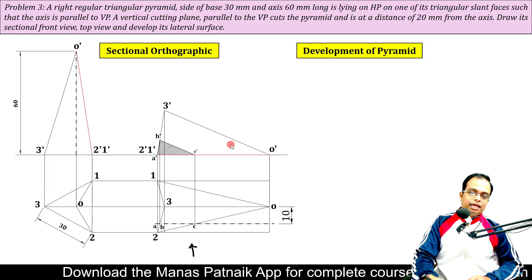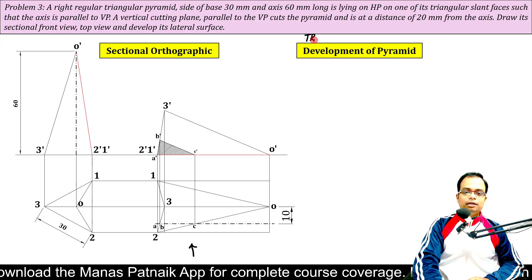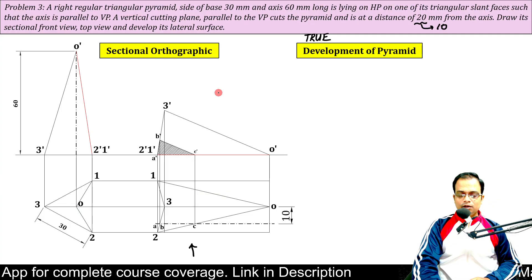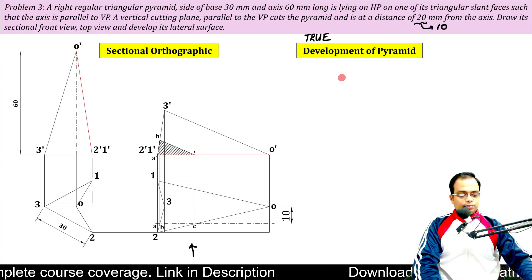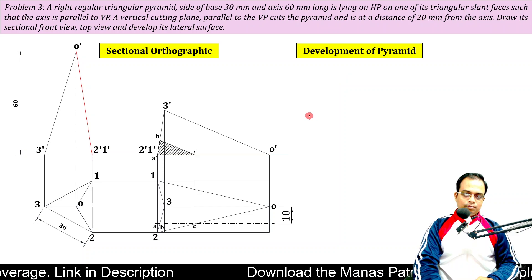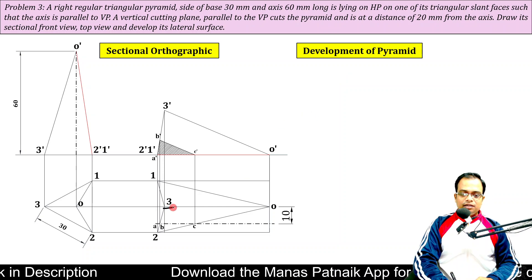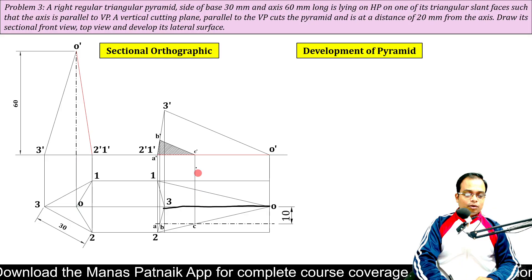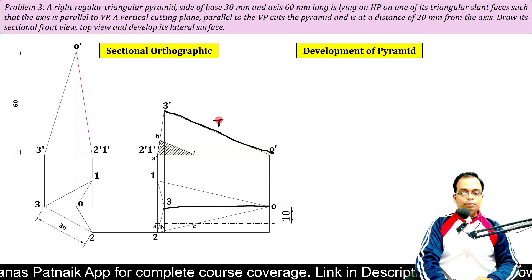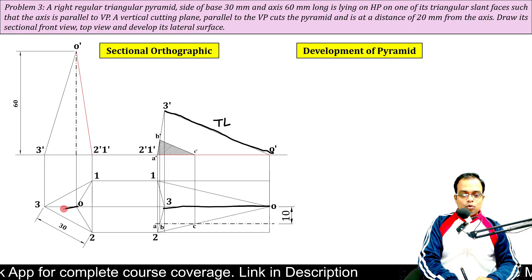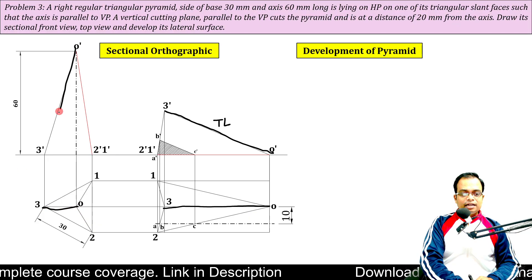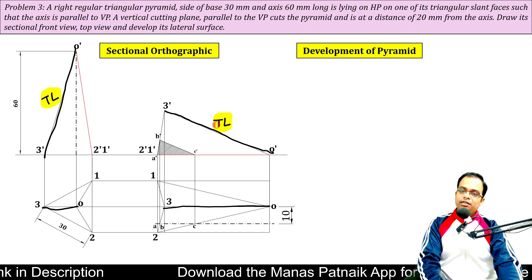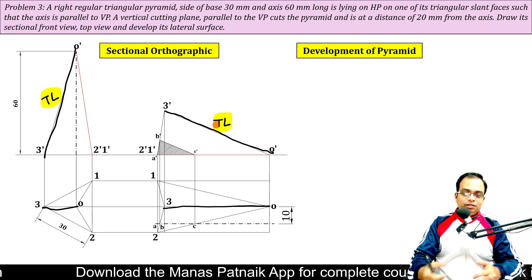Every length chosen for development must be a true length. Can you determine the true length of any slant edge of this pyramid? Yes — O3 is parallel in the top view, so the front view will show the true length. Since O3 is parallel to XY, O'-3' will be the true length. You can choose from either step one or step two — it is your choice.